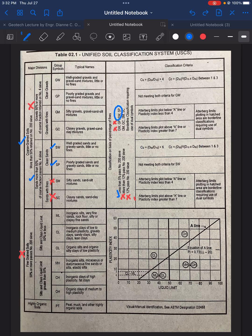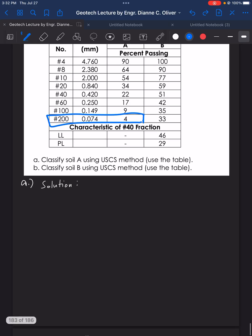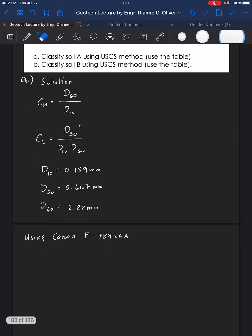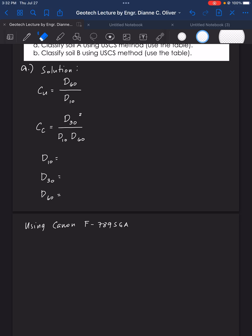The formula is already given. So we will just solve it. Here is the formula. And this is where the calculator enters. We will be solving for the value for D10 and D60 and D30 using Canon F789SGA. We will need to find the value for D10, D30 and D60. What does this mean? D10 means D, diameter, passing 10%.